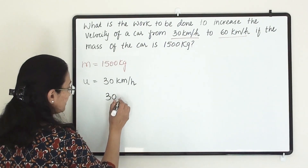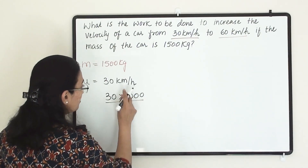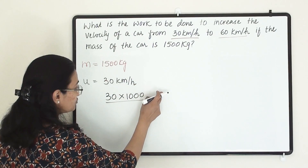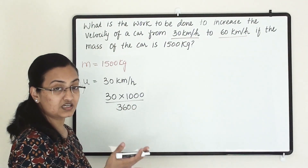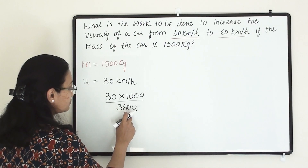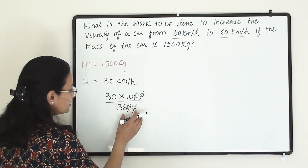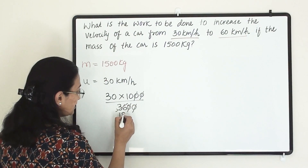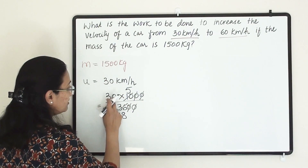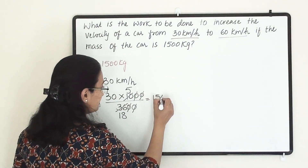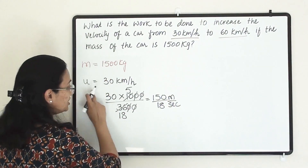So 30 km is there. To convert into meters, we multiply by 1000, and to convert hours into seconds, we divide by 3600 (since 60 × 60 = 3600). Cancelling two zeros gives us 36 in the denominator and 5 in the numerator per 10, so we get 30 × 5 = 150 divided by 18 meters per second as the initial velocity.